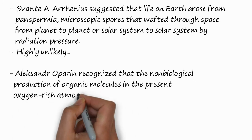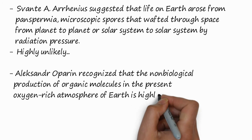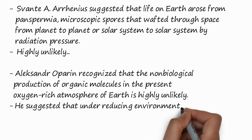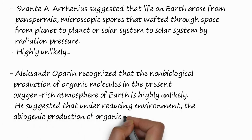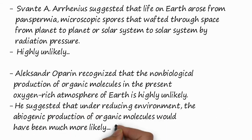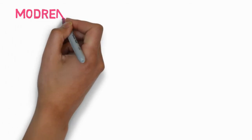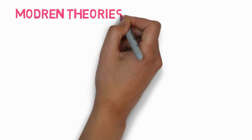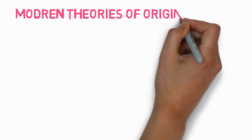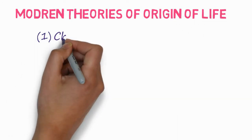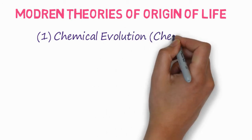Svante Arrhenius suggested that life on earth arose from transpermia — microscopic spores that swept through space from planet to planet or solar system to solar system by radiation pressure. But this is highly unlikely. Later on, Alexander Oparin recognized that non-biological production of organic molecules in the presence of an oxygen-rich atmosphere of early earth is unlikely. He suggested that under a reduced environment, abiogenic production of organic molecules is more likely, occurring in the hot dilute soup.